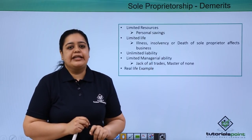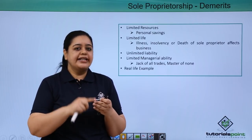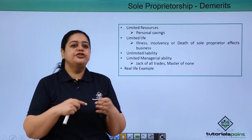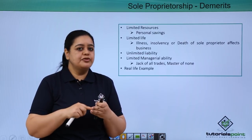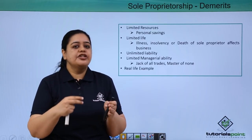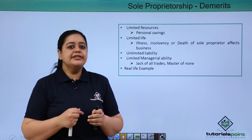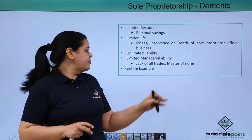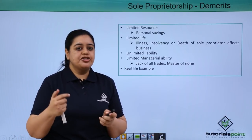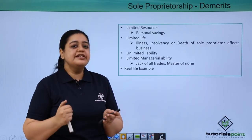The next demerit is limited managerial ability. When Rama opened Rama's kitchen, she had to do everything: getting raw materials like vegetables and wheat, delivering, marketing, and keeping books of accounts. Initially, they have to do everything because the business cannot afford to hire high-priced professionals. Because they are concentrating on so many things, they become a jack of all trades but master of none, which affects their managerial ability and, consequently, the business performance.